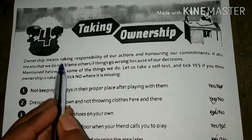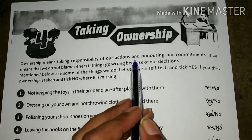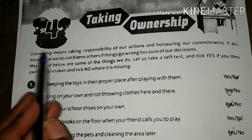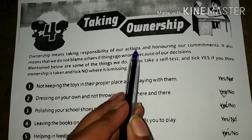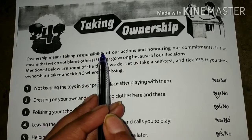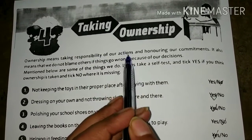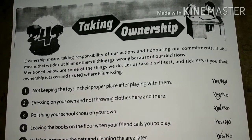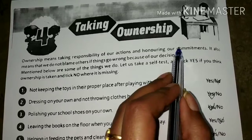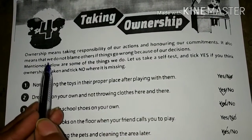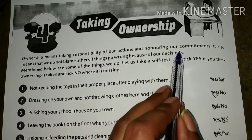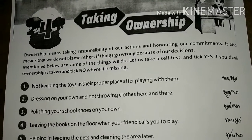Ownership ka matlab kya hota hai? Ownership ka matlab apne actions ki responsibility lena — matlab apne kaam ki zimmedari lena, aur apne kaam ki respect karna, aur apne kaam ko imaandari ke saath pura karna. It also means that we do not blame others if things go wrong because of our decisions.